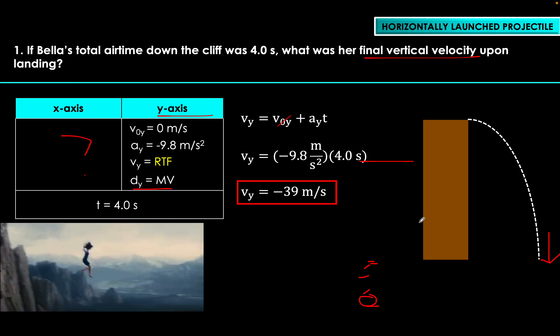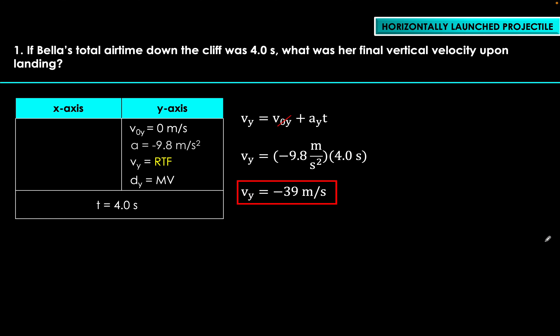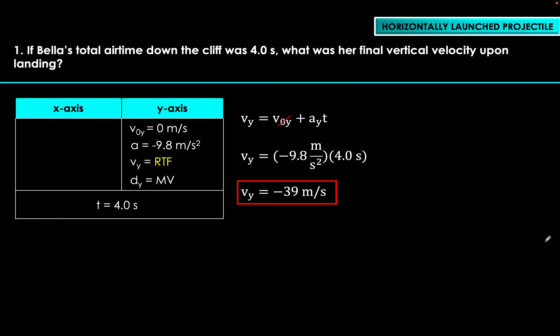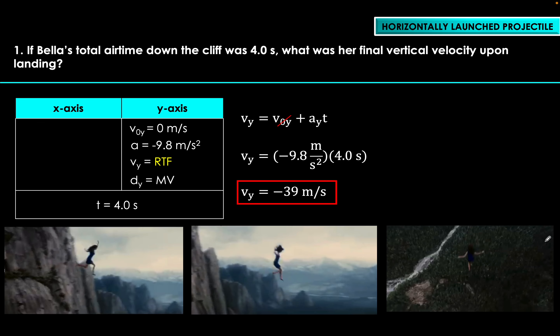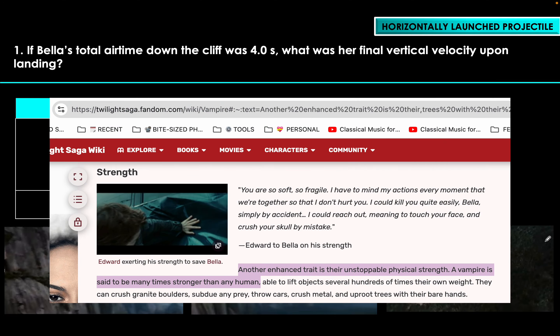The value looks reasonable because the total airtime of Bella is 4.0 seconds, so the cliff was probably quite high. In terms of magnitude, 39 meters per second is actually fast — it's beyond the maximum speed of cars on expressways. In reality, this could cause a fatal impact, but of course, Twilight is Twilight. Bella is a vampire, and in the world of fiction, vampires are known for their incredible strength. This scene is probably just intended to showcase Bella's non-human level of strength shortly after she transformed.